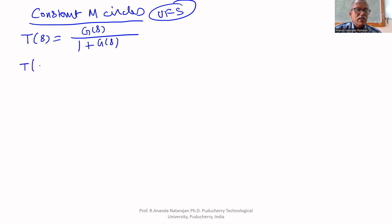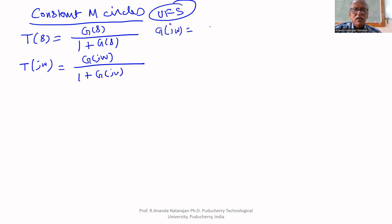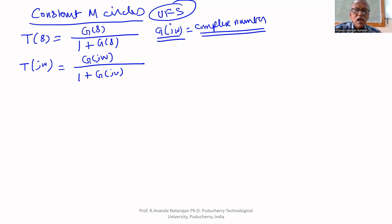So T(jω) equals G(jω) upon 1 plus G(jω). Now G(jω) is a complex number — if you substitute any point, you will get a complex number. So we can write G(jω) as X plus jY.